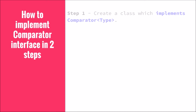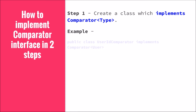You can implement the Comparator interface in two simple steps. Step one: create a class which implements Comparator for a particular type. For example, we say 'public class UserIdComparator implements Comparator<User>' — meaning we are creating a comparator for the User class named UserIdComparator.